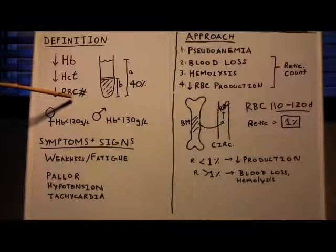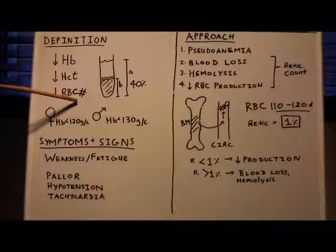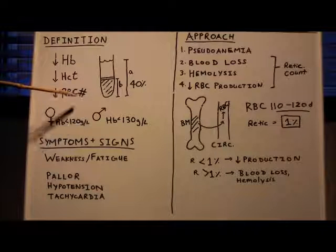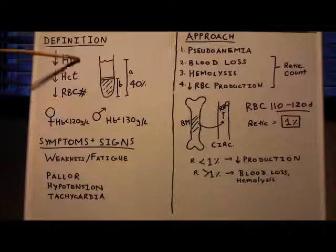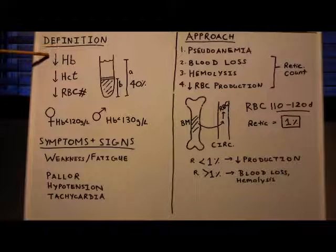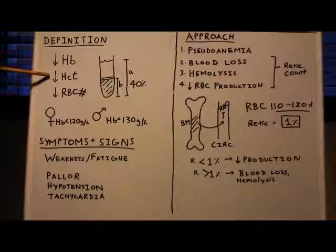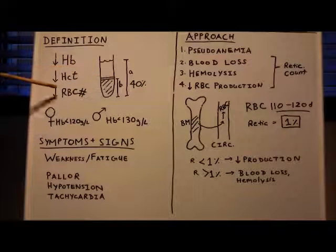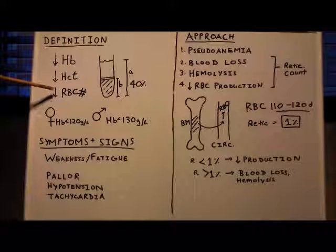Red blood cell number is the number of red blood cells per a certain volume. It's important to remember that all of these three numbers are concentrations. Hemoglobin is usually seen in grams per liter or grams per deciliter. Hematocrit is a proportion, and red blood cell number is per a given volume.